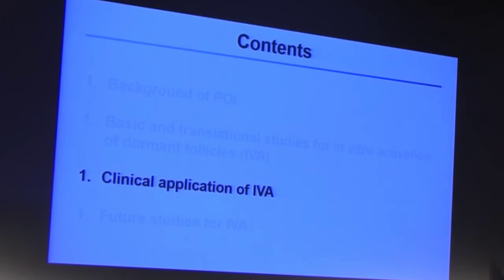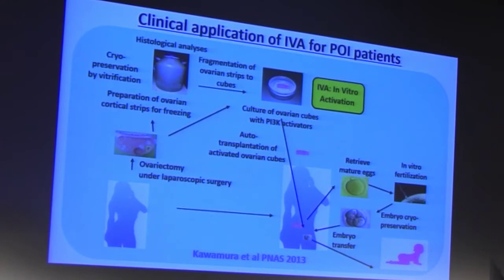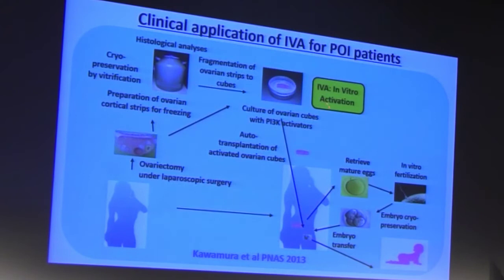Based on the success of these animal studies, we also performed a monkey study to confirm the safety of this approach, then moved on to clinical application. The clinical IVA scheme begins with ovariectomy under laparoscopic surgery, followed by in vitro activation, with the option to prepare ovarian cortical stripes for freezing using the vitrification method. During cryopreservation, histological analysis can detect residual follicles. After IVA culture, activated ovarian cubes are transplanted using laparoscopic surgery, followed by regular IVF.